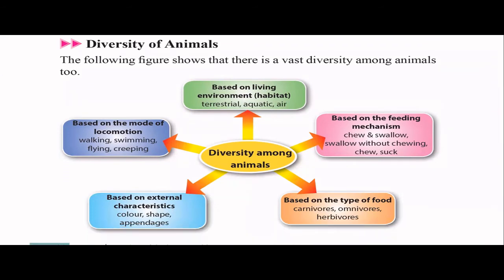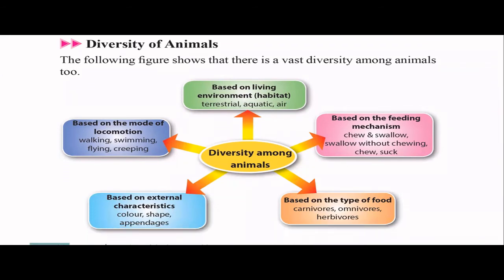Now comes the diversity of animals. Similar to plants, we can divide animals based on their living environment — their habitat. Terrestrial animals include lions, tigers, and zebras. Aquatic animals include fish and others. Air-dwelling animals are mainly birds, and some butterflies and insects that live and fly in the air.